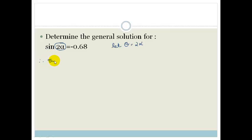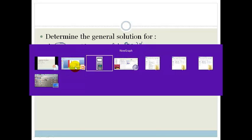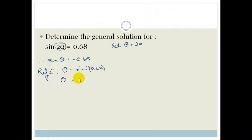So now we've got sin(θ) = -0.68. Let's solve this normally. We're going to find the reference angle. The reference angle is just the inverse function of the positive value — we just want to find the size of this angle. We go shift sin of 0.68 and we get 42.84 degrees. So our reference angle θ = 42.84 degrees.